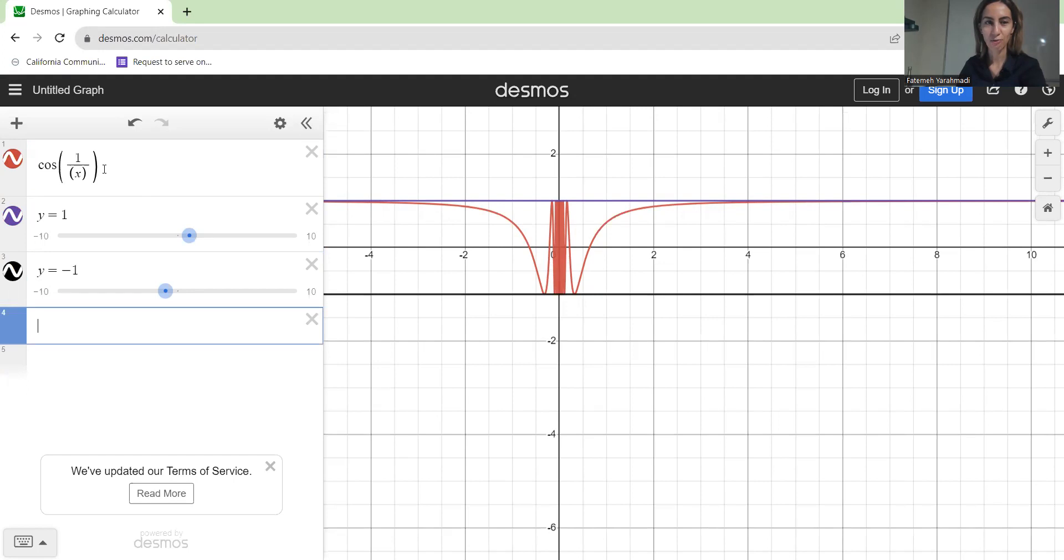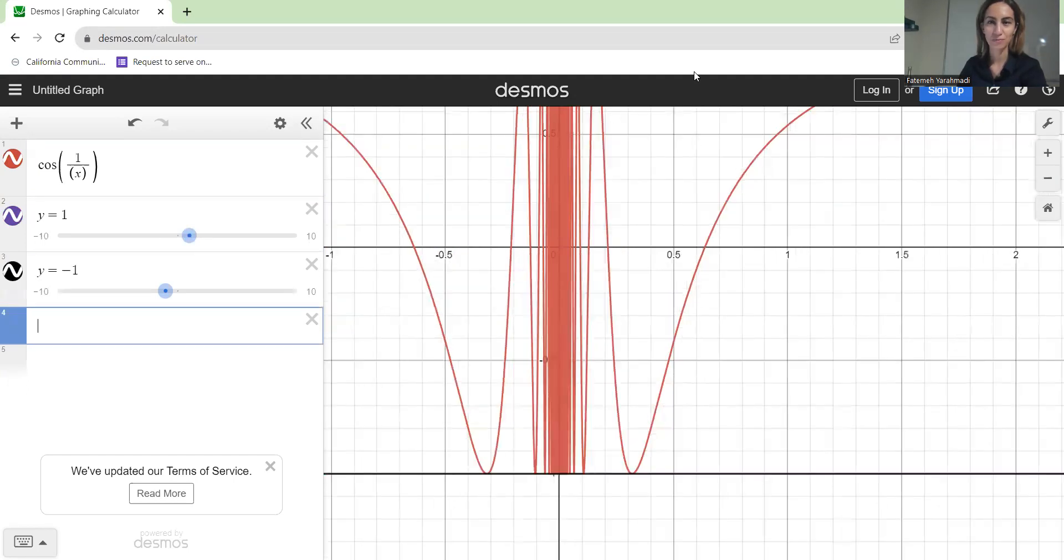This function, cosine of 1 over x, is bounded between these two flat lines, which are y equals to 1 and y equals to negative 1. Perfect.